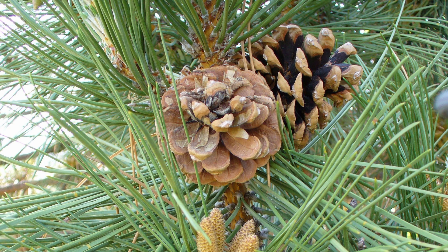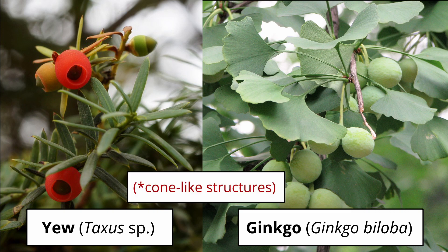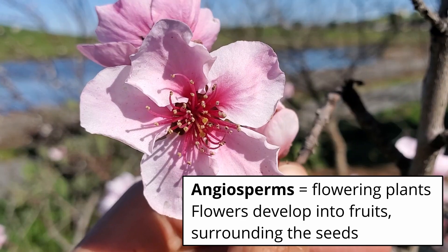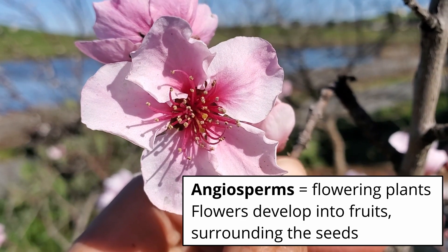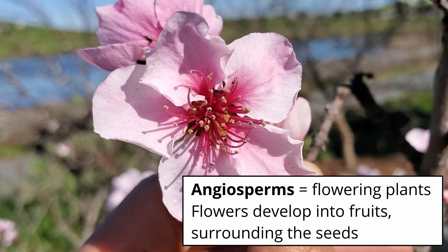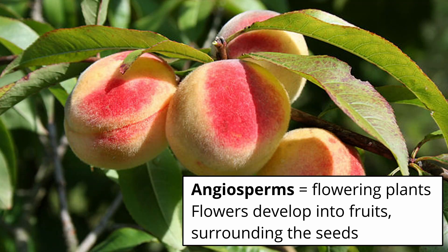The name gymnosperm means naked seed and their seeds are not covered by a fruit. They're usually found in cones like in conifers, or individually like in a yew or a ginkgo. You might be looking at these pictures of the yew and ginkgo cones and thinking those totally look like fruits. But that fleshy material around the seed is actually just part of the seed. In contrast, angiosperms are the flowering plants and these do develop what we traditionally consider as fruit to surround the seed.